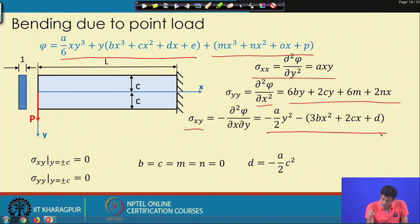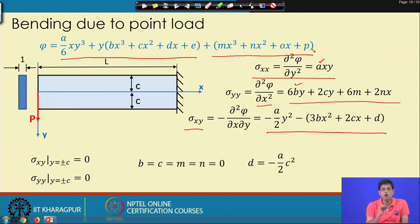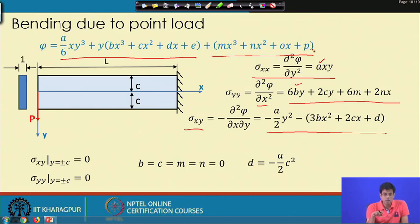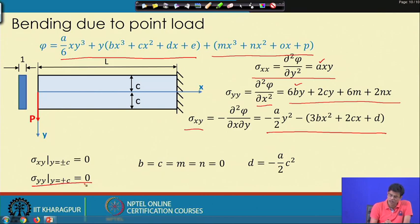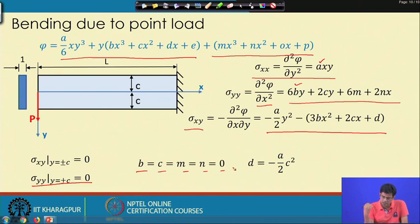Invoking the boundary conditions on all constants, it is found that b, c, m, n, and o are all zero.